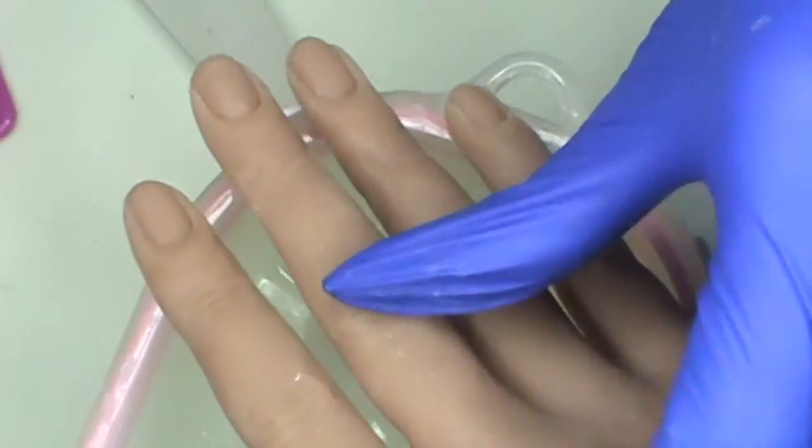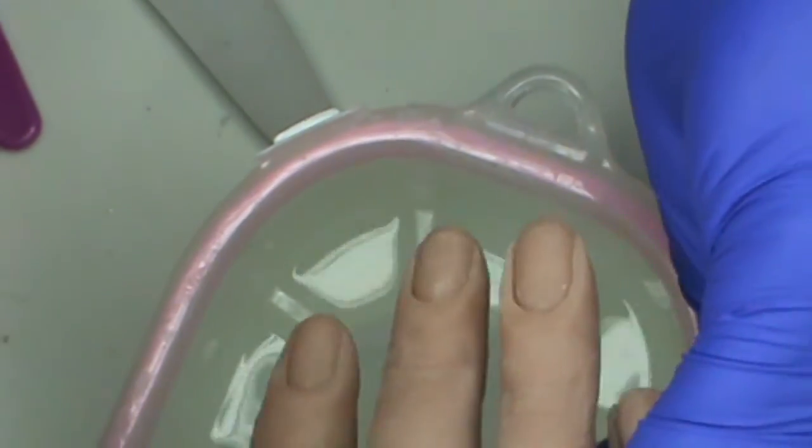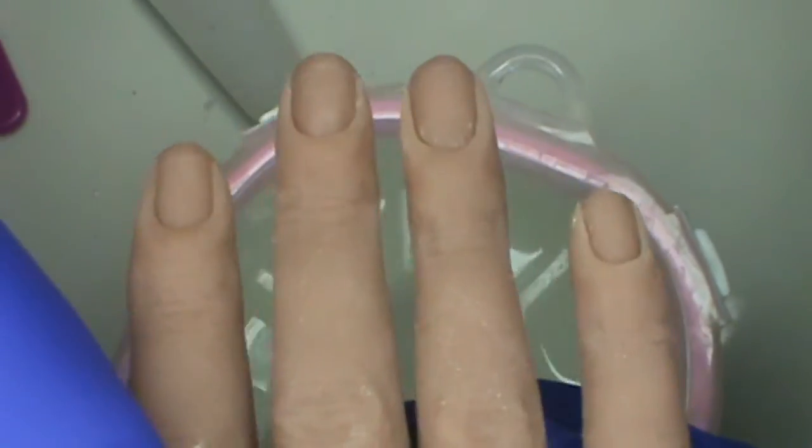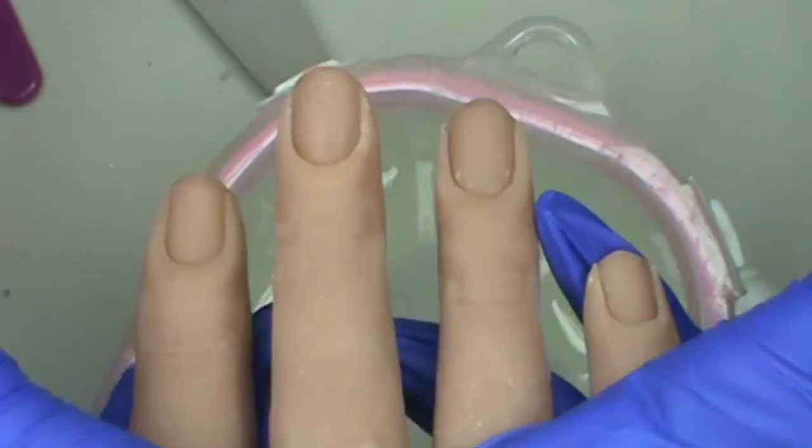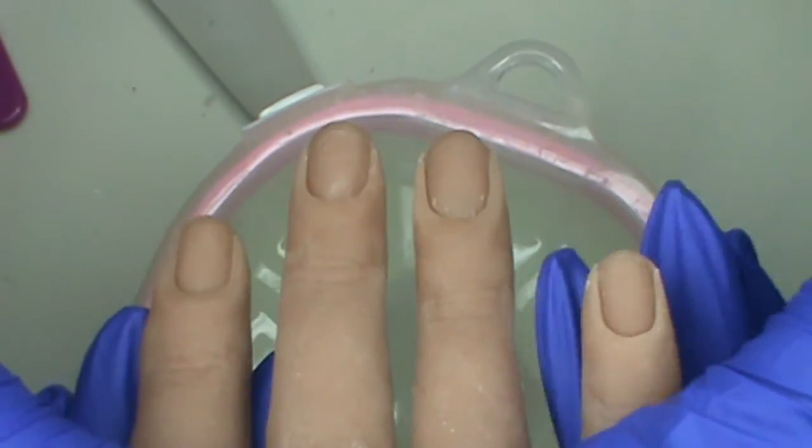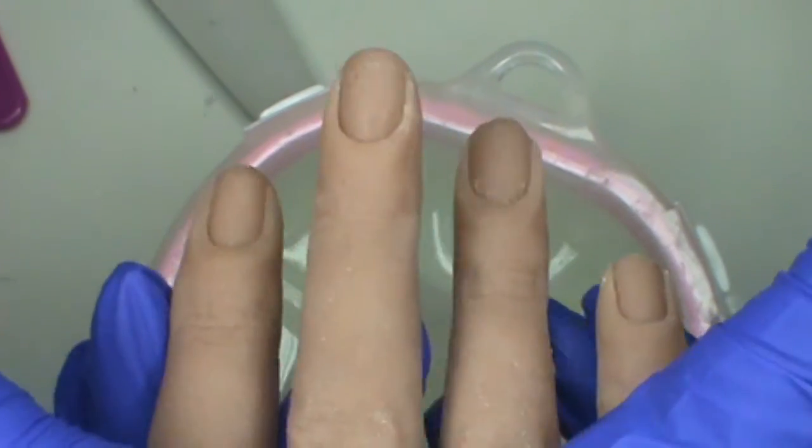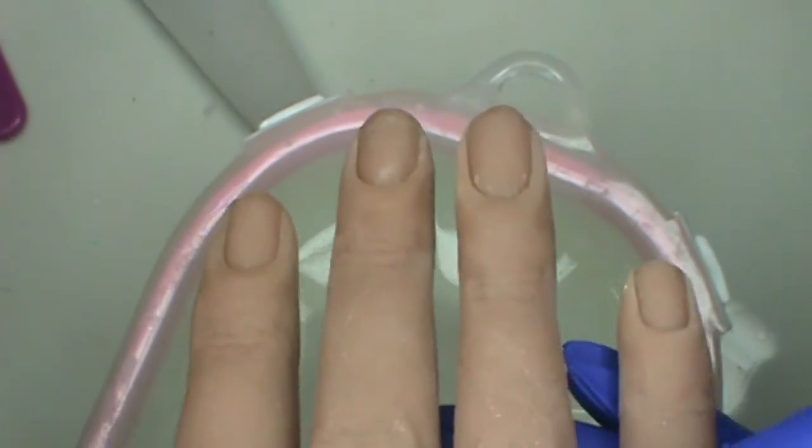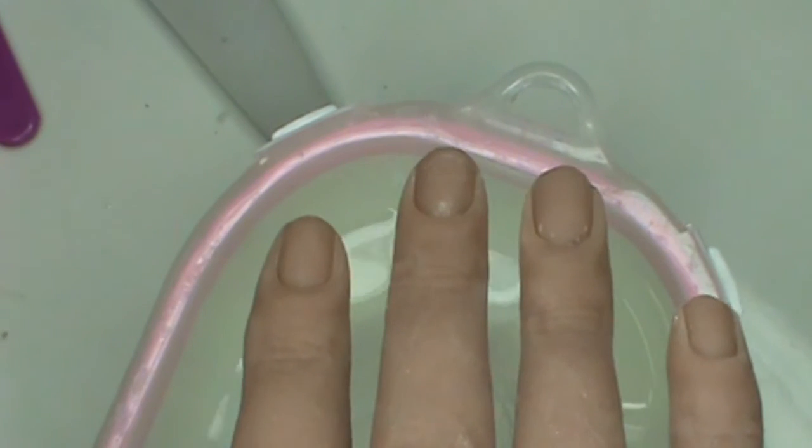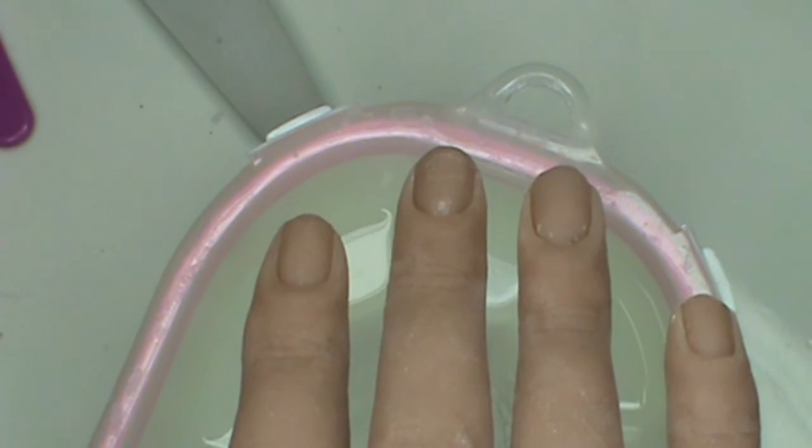All right guys, so there it is, completely clean again. And it only took 10 minutes to soak them off and they did have a layer of poly gel on them. So it did soak off. All right, so thank you guys for watching. I hope you like this video. Please give it a big thumbs up and thank you guys, bye.